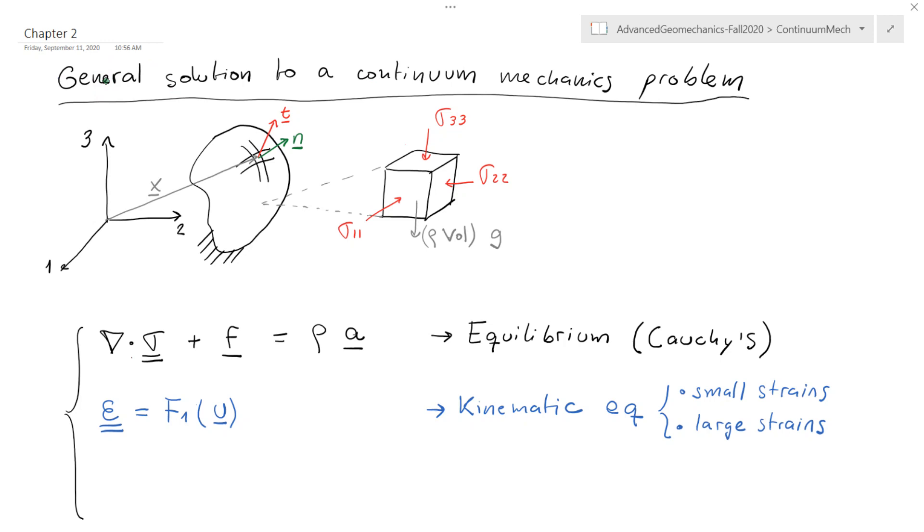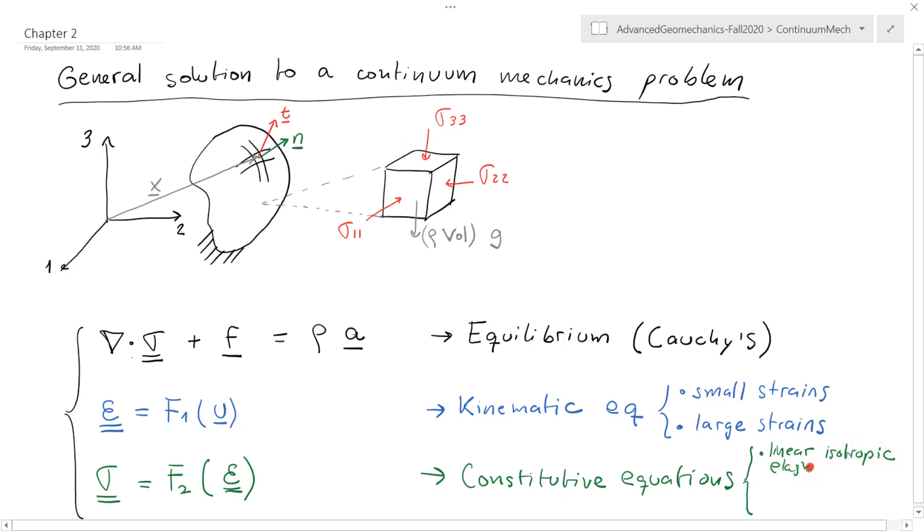Now that we have the kinematic equations, let's see the third equation that we're going to need in any continuum mechanics problem. These are the constitutive equations. The constitutive equations are going to link stress to strain through a function F2. The constitutive equations are a function of the material properties, and depending on the material you have, you may have different kinds of constitutive equations. We're going to start seeing the theory for linear isotropic elastic solids, which is the simplest theory for constitutive equations.